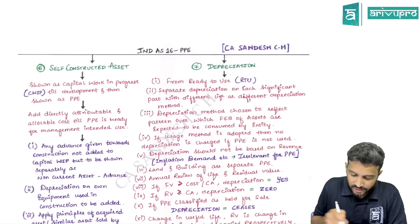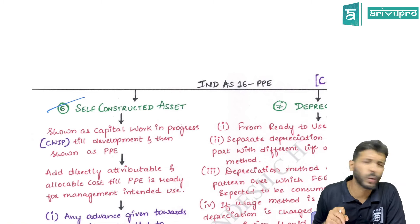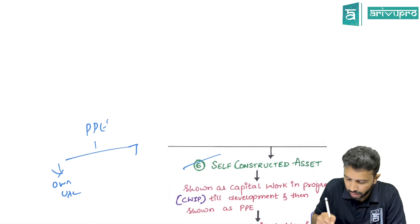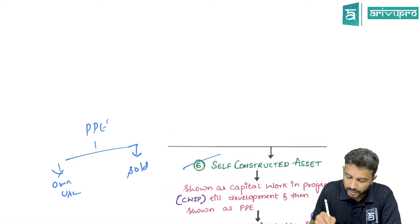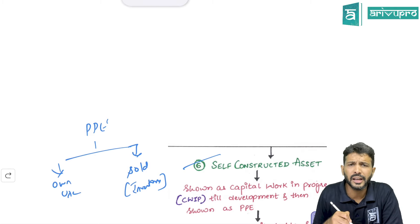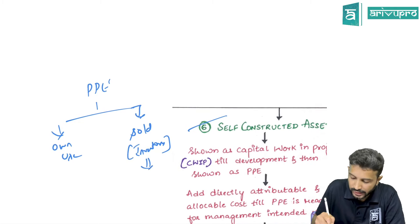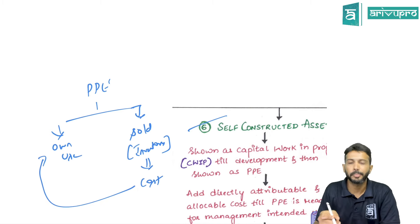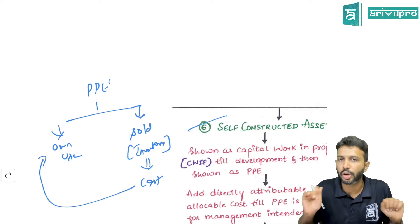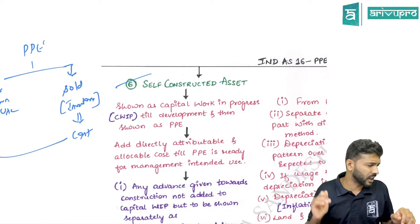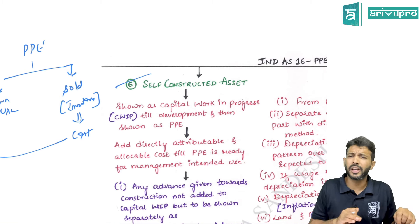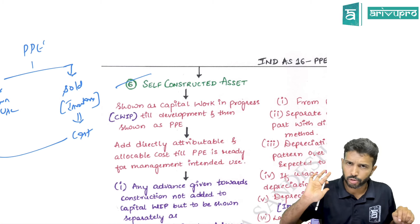For self-constructed assets, use the same principles as for acquired assets. If PPE is produced partly for own use and partly to be sold in the ordinary course of business, the portion to be sold becomes inventory, not PPE. The cost of the self-constructed asset used for own purpose equals the cost of the equivalent inventory produced.